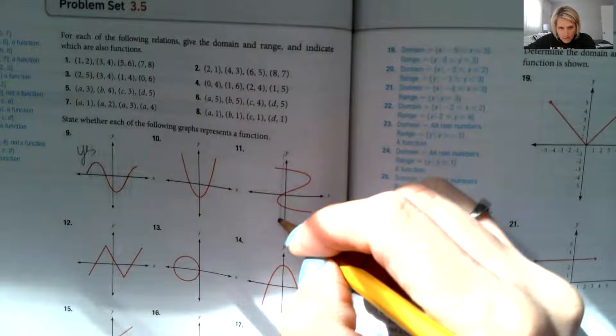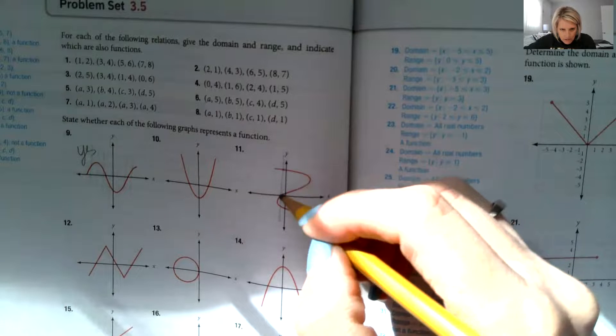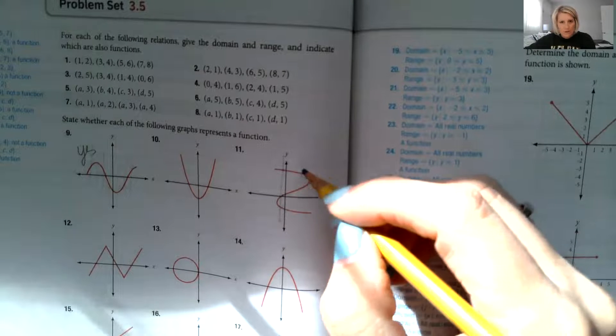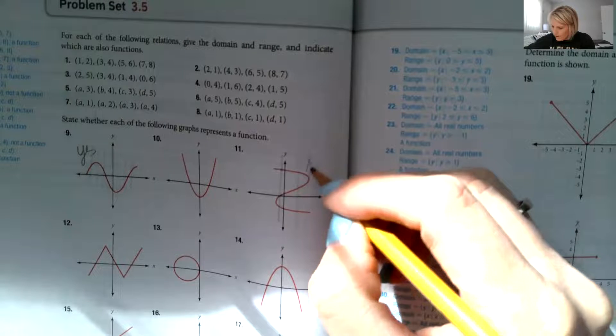Let's look at 11. If I draw a line there, it looks like I'm crossing my graph once, two, three times. Oh yikes. No, this is a no. It's not a function.